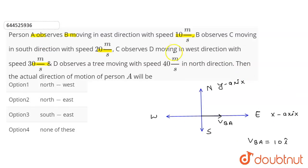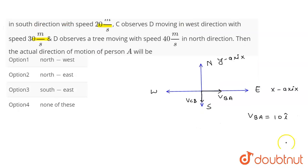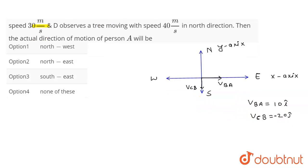B observes C moving in the south direction with speed 20 meters per second. The velocity of C with respect to B is −20ĵ, because south is along the negative y-axis.